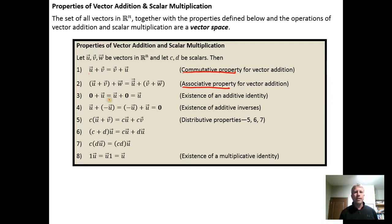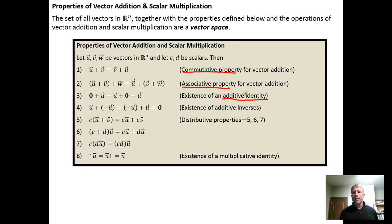This one is the existence of an additive identity — again, important to commit to memory. The additive identity for an n-dimensional vector space is the vector for which all n components are zero. I like to think of it as the identity because it preserves the identity of the other vector under addition. When you add the zero vector to U, it doesn't change U — U's identity is preserved.